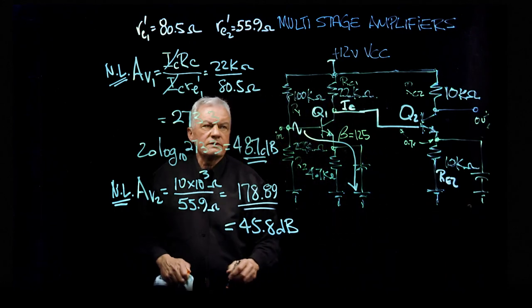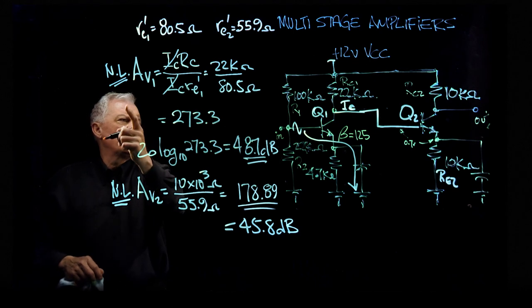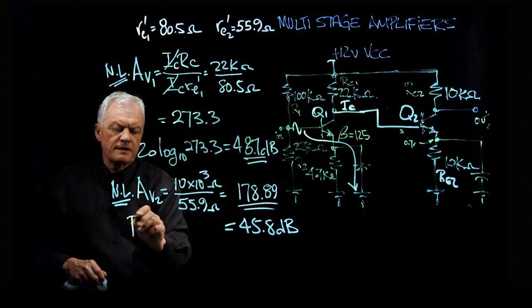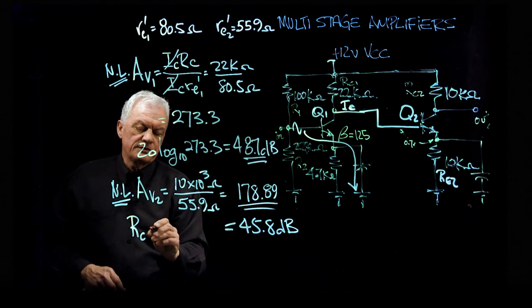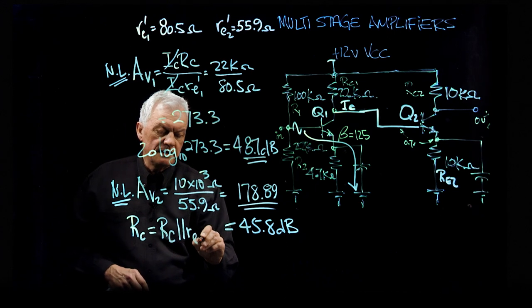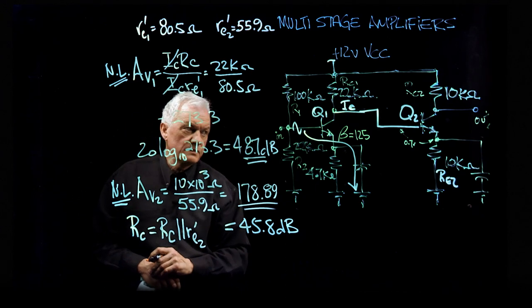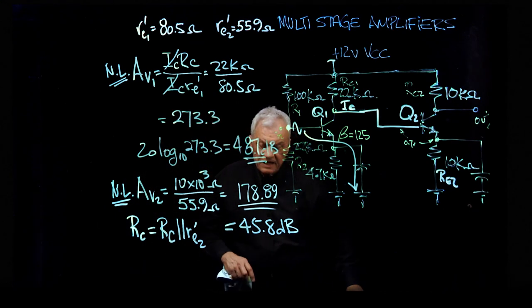So we're going to be looking at the load that stage one will be seeing is r small c, which is the AC determination of the R big C in parallel with the RE2 prime.